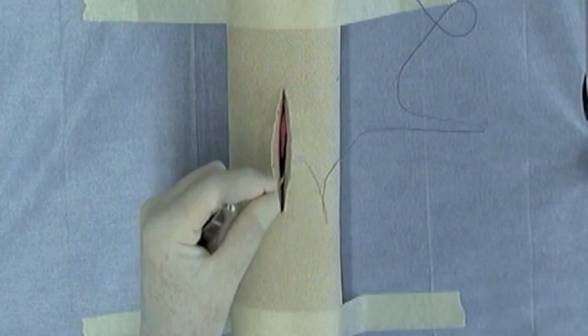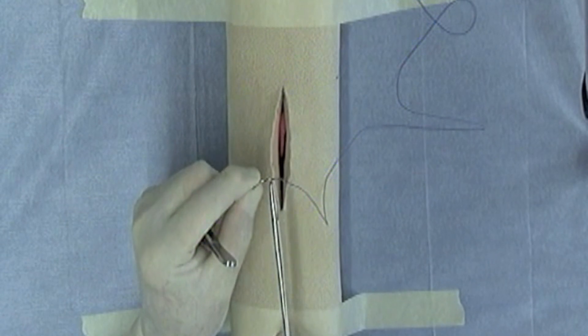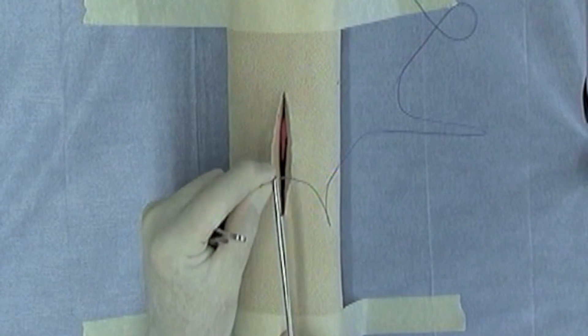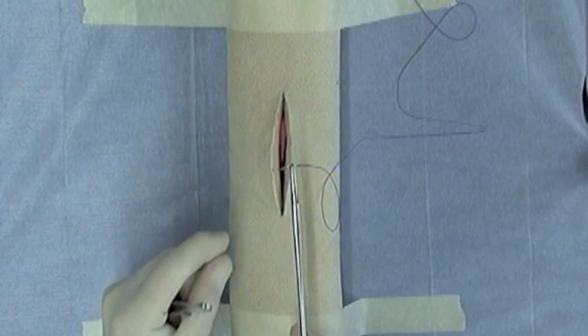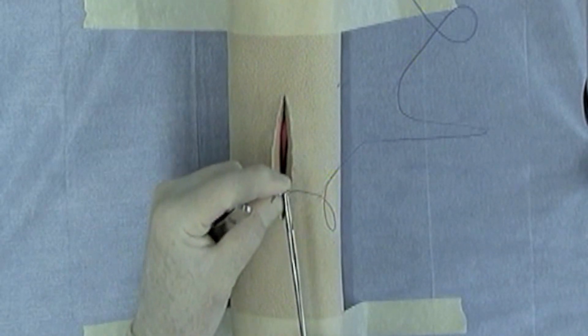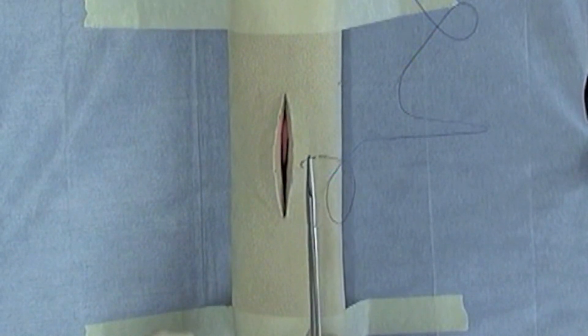To properly apply the needle to the needle holders, you want to grab the needle right at the center or just slightly behind center toward the swagged on side of the needle. Also, you want to put the needle in the needle holders right at the tip and you want to clamp.